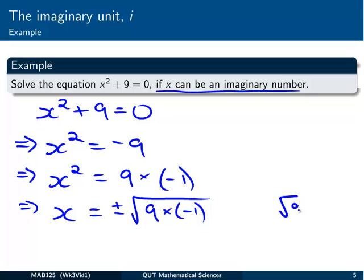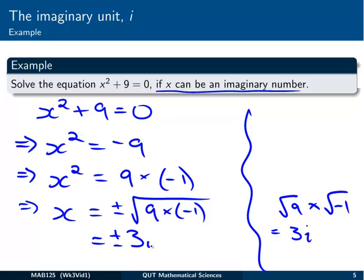So, x is going to be equal to plus or minus the square root of all that stuff. And that's going to be the square root of 9, just in my working space here, times the square root of minus 1. The square root of 9, of course, is 3. And the square root of minus 1, that's our new number i. So, we've got there plus or minus 3i.